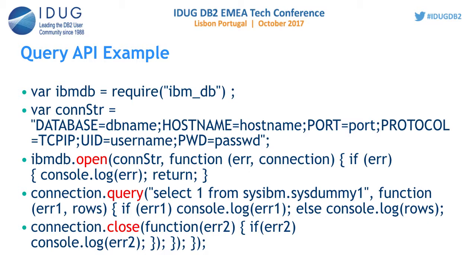Here is a sample test program showing how to use the query API. First we require ibm_db, set the connection string, call open, and execute a query. We give the SQL and get the result in the callback function, print the result, and once done, close the connection. In these five lines we are able to open the connection, execute a query, get the result, and close the connection.